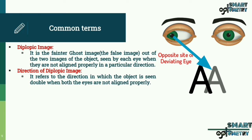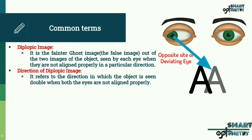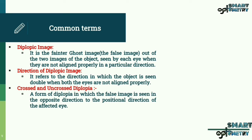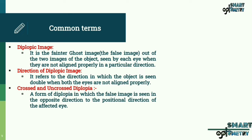Direction of diplopic image refers to the direction in which the object is seen double when both eyes are not aligned properly. Crossed and uncrossed diplopia: a form of diplopia in which the false image is seen in the opposite direction to the positional direction of the affected eye.